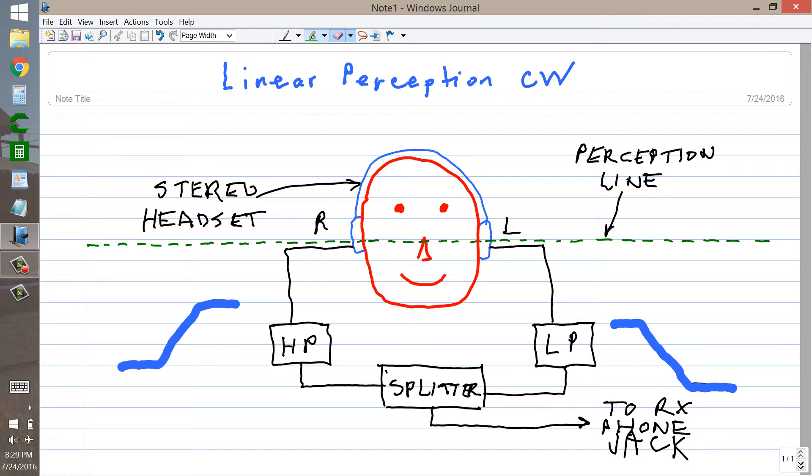But basically what it is, is a linear perception CW filter, which involves the use of a stereo headset, which has a high pass filter in the right hand channel, and a low pass filter in the left hand channel.